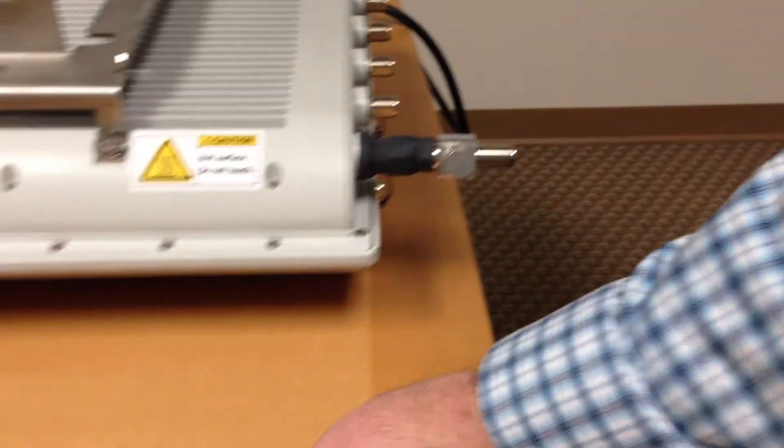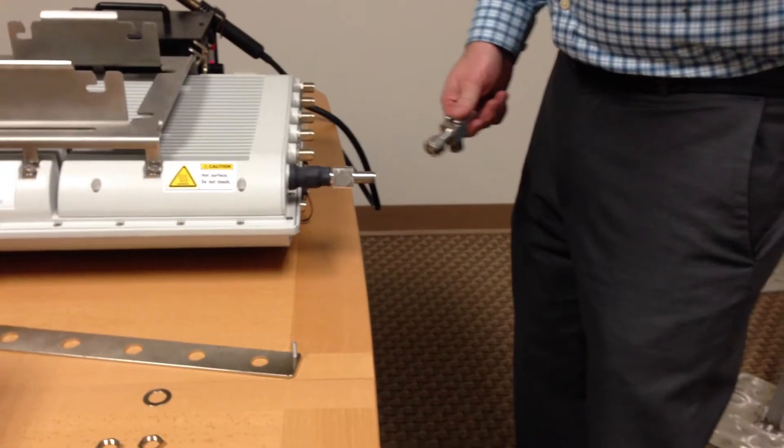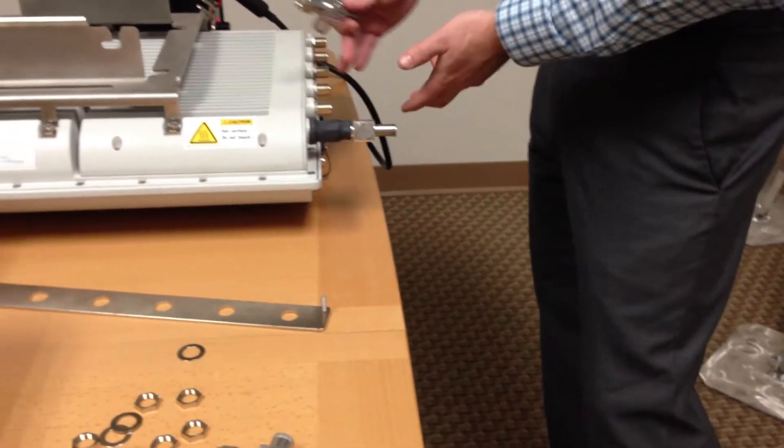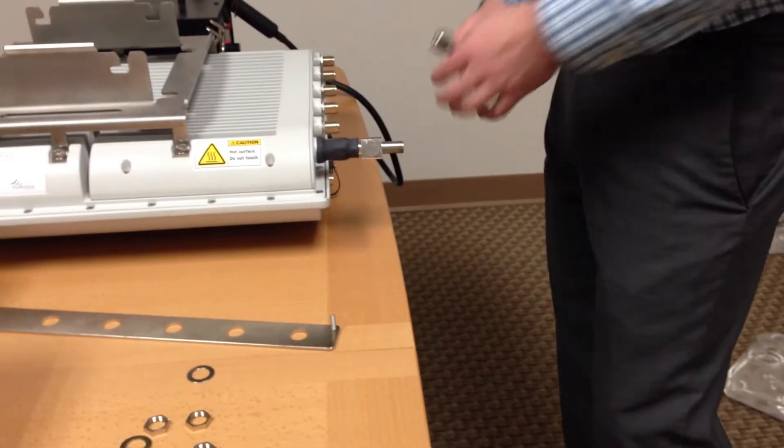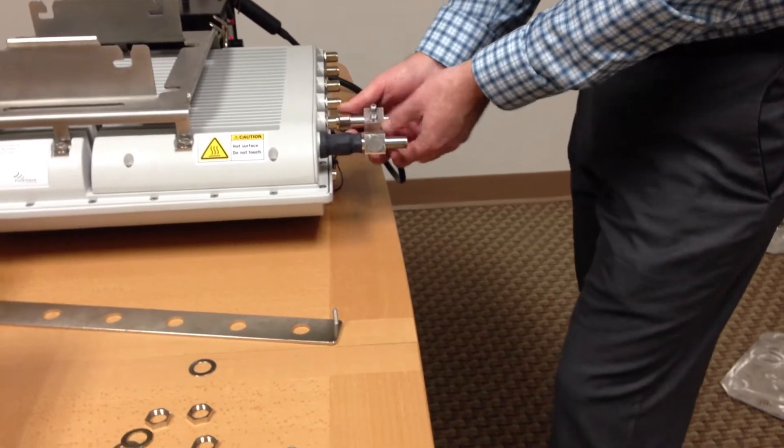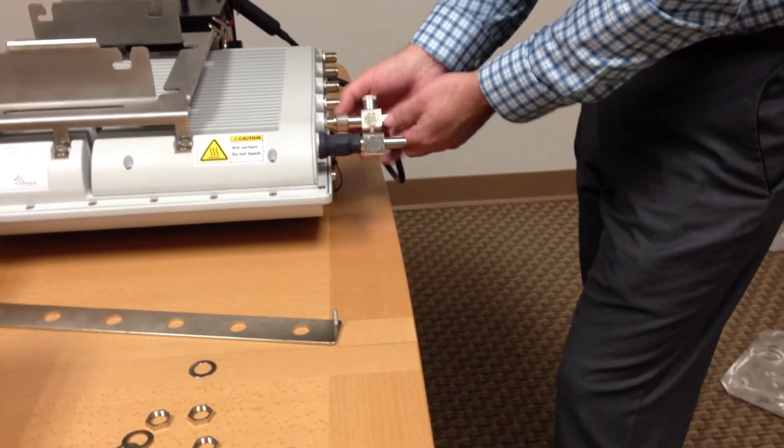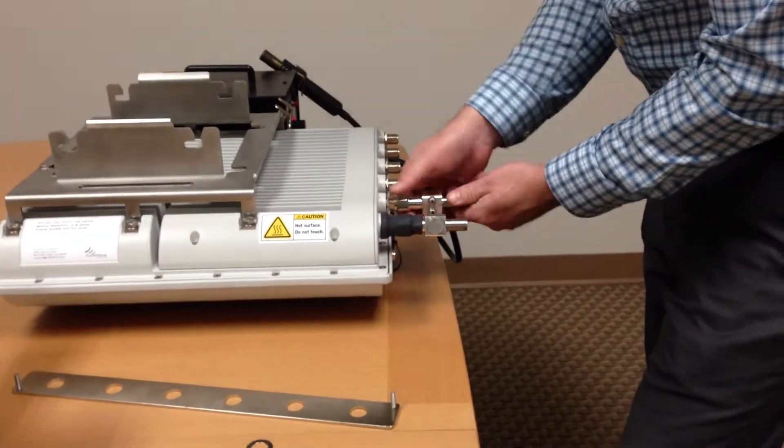Next, we'll want to go ahead and continue that down the line. I would go ahead and put a piece of heat shrink on each connector. For time's sake, I'll go ahead and skip over these to speed things up a little bit, but you want to make sure you weatherproof first.